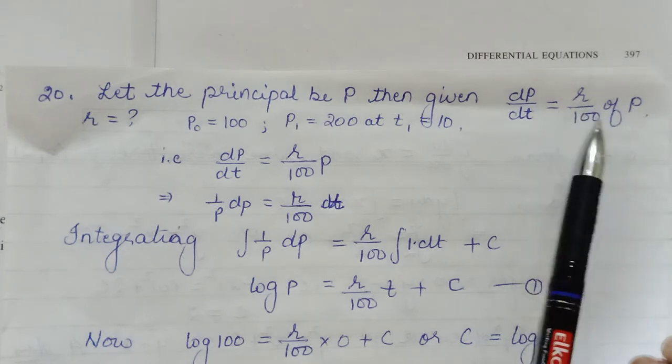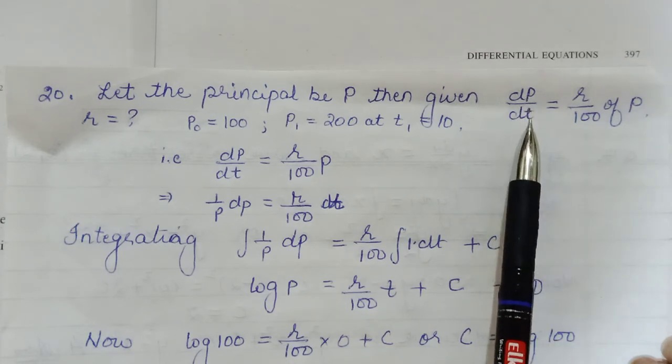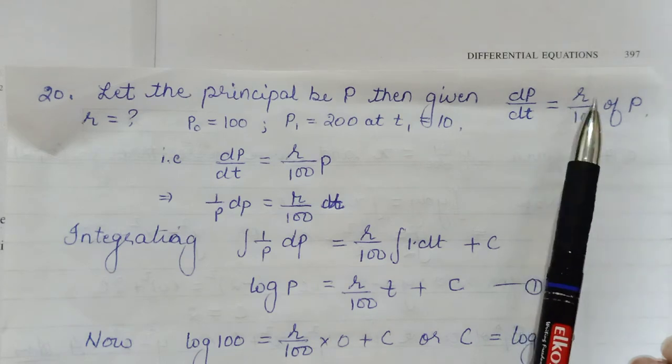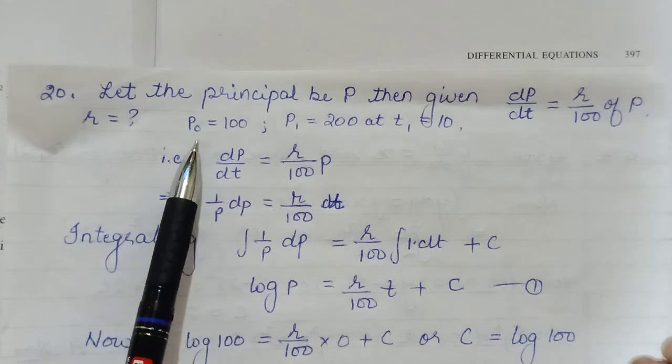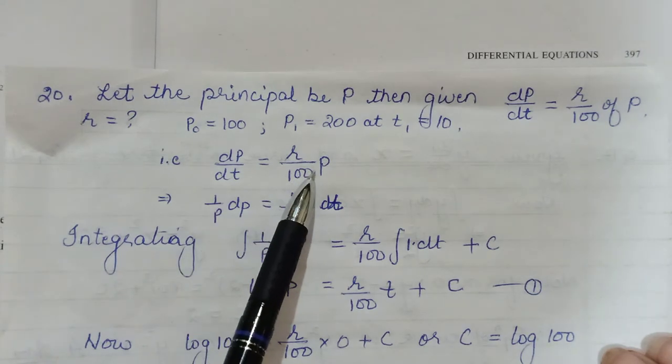So this is what is given to us: dP/dt, rate of change of principal, is R/100 times P. Okay, so then again we will do variable separable form.